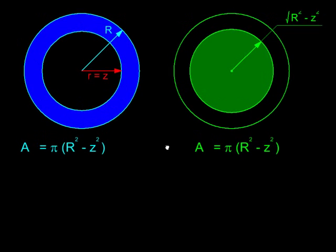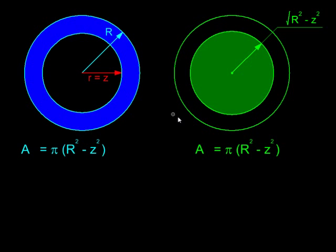But now we are seeing something very interesting. The section of the hemisphere and section of that intricate solid that we had, cylinder minus cone, they happen to have the same areas. And not only for a special cross section, but all cross sections because this z is a variable. And therefore,